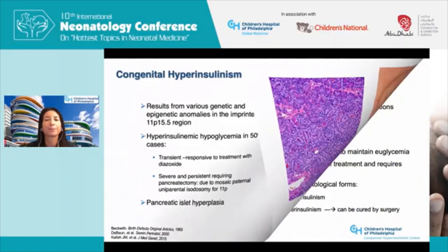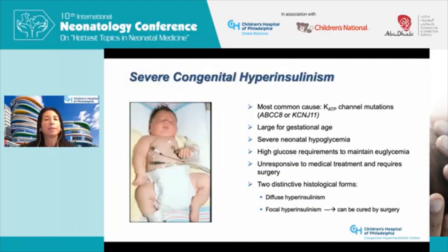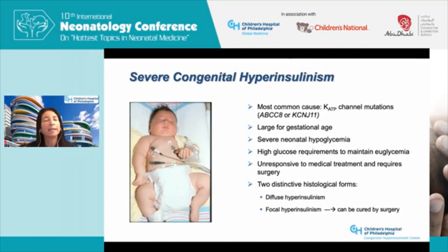The most common and severe congenital form of hyperinsulinism is caused by inactivating mutations in the gene encoding the KATP channels of the beta cells. These babies are typically born large for gestational age with severe neonatal hypoglycemia, require high glucose infusion rates, and are unresponsive to medical treatments, frequently requiring surgery. Importantly, in the mid-1990s it became apparent that there are two histological forms: a diffuse form affecting the whole pancreas, and a focal form where a small lesion, if surgically removed, can cure the hyperinsulinism.